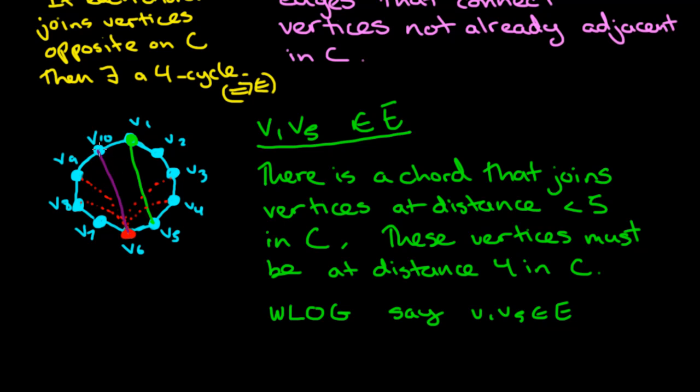If V6, V10 is the chord, then we have a 4 cycle which goes V5, V6, V10, V1. And that's a contradiction.